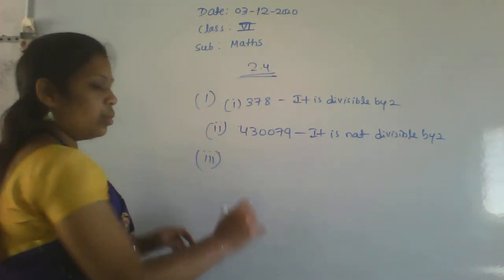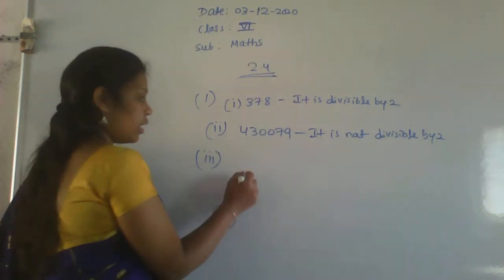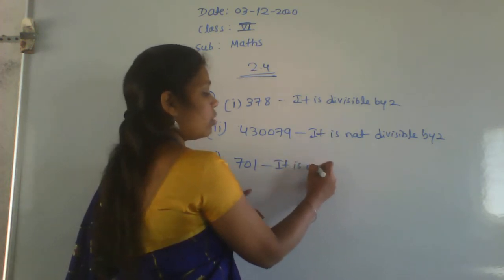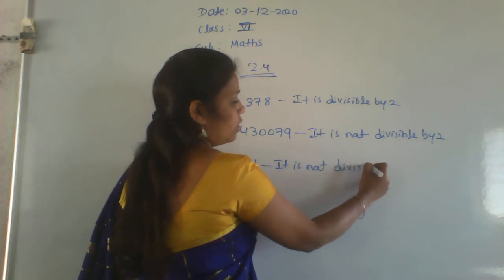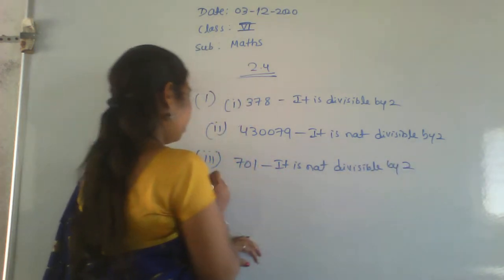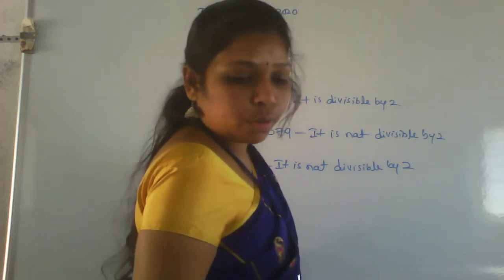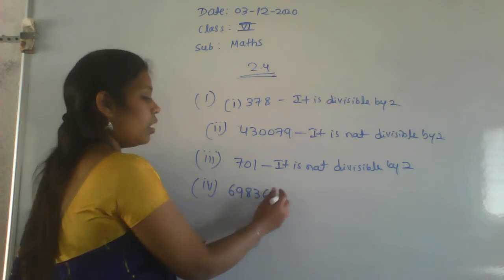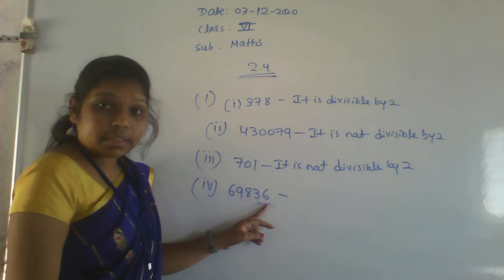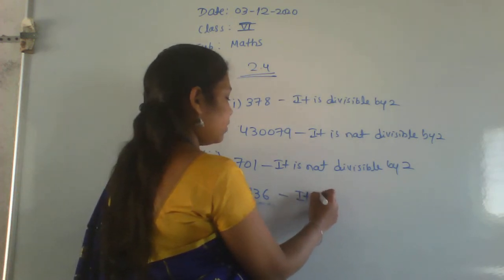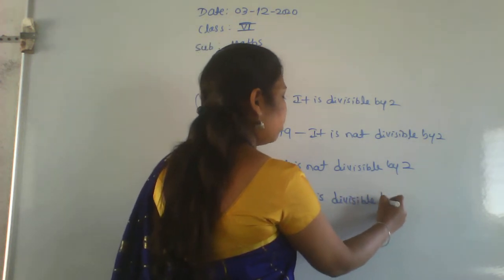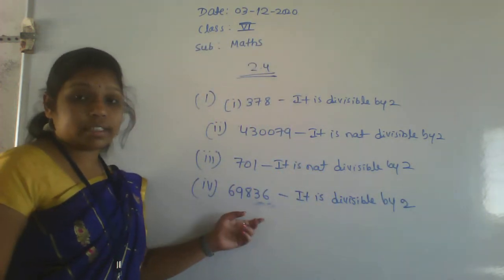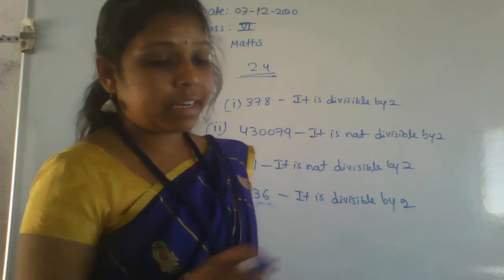The third number is 701. The last digit, 1, is an odd number. So it is not divisible by 2. The fourth number is 69836. The last digit is an even number, therefore it is divisible by 2. The first question is now completed.